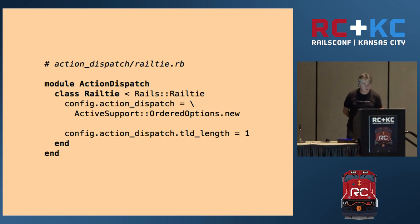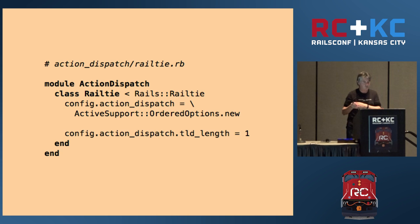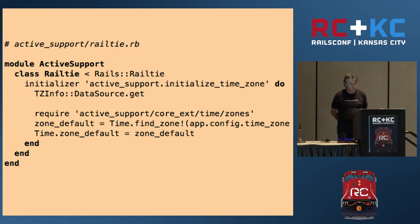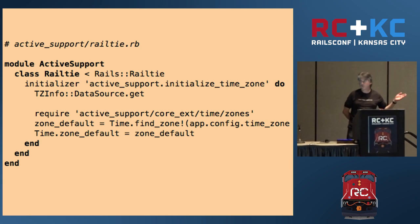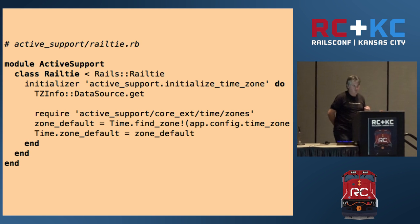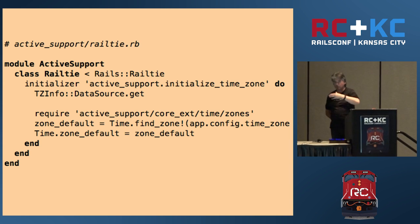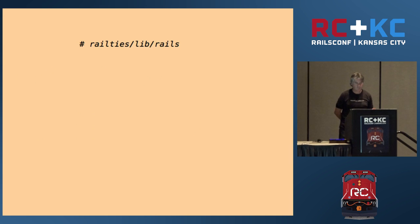Here's an example from ActionDispatch showing configuration. This is how ActionDispatch defines a configuration point called tld_length with a default value of 1. And here's an example from ActiveSupport showing another initializer — it takes the time zone the application has configured and sets up whatever ActiveSupport needs to take that configuration point into account.